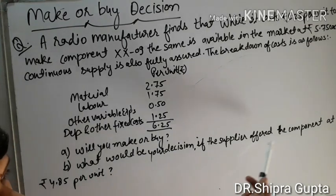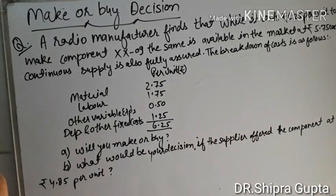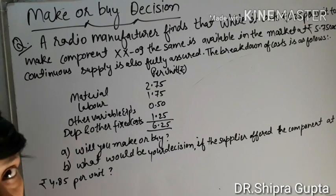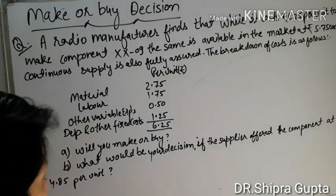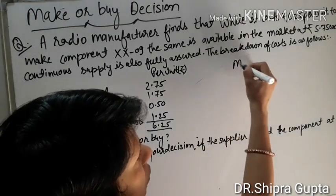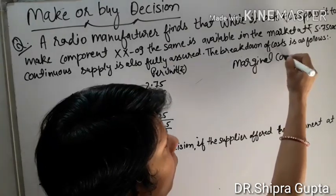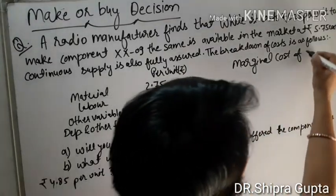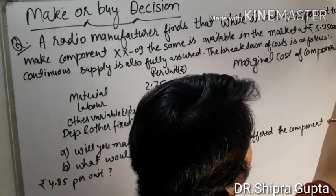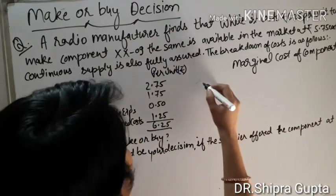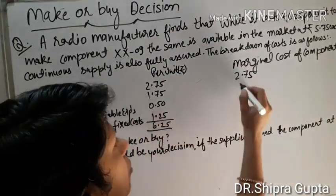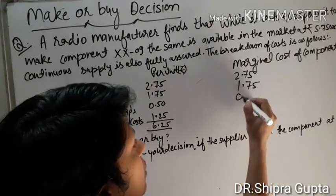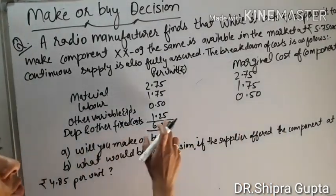The second part asks: what would be your decision if the supplier offers the component at ₹4.85 per unit instead of ₹5.75? To solve this, we will calculate marginal cost, because the minimum price is the marginal cost. So first we calculate the marginal cost of the component — materials ₹2.75, labor ₹1.75, other variable expenses ₹0.50. We ignore fixed cost.